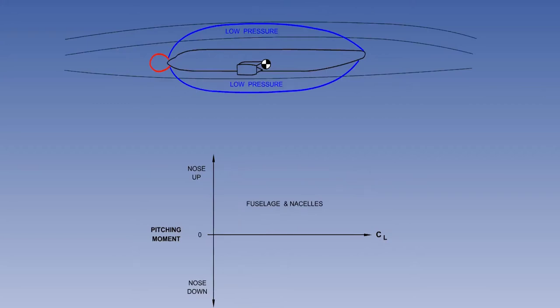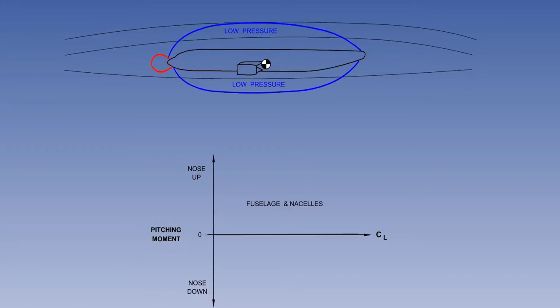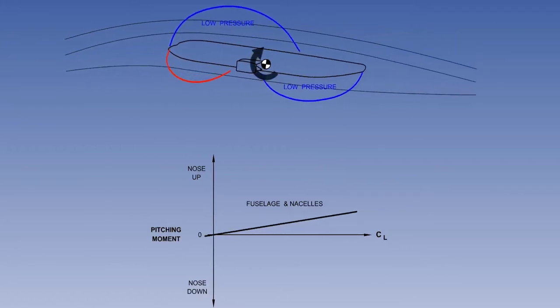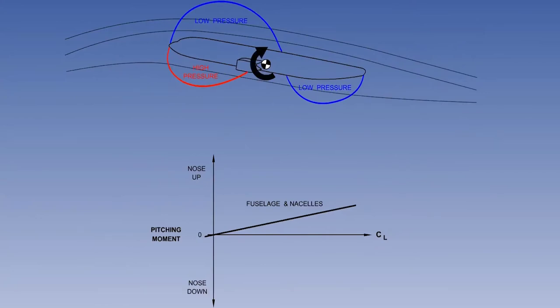At the small angle of attack used in the cruise, the fuselage acts as a symmetrical aerofoil. The reduction in pressure on the top is the same as the reduction in pressure on the bottom, with an area of stagnation pressure at the nose. Under these conditions, the fuselage generates no pitching moment. Any change in angle of attack generates a destabilising pitching moment.